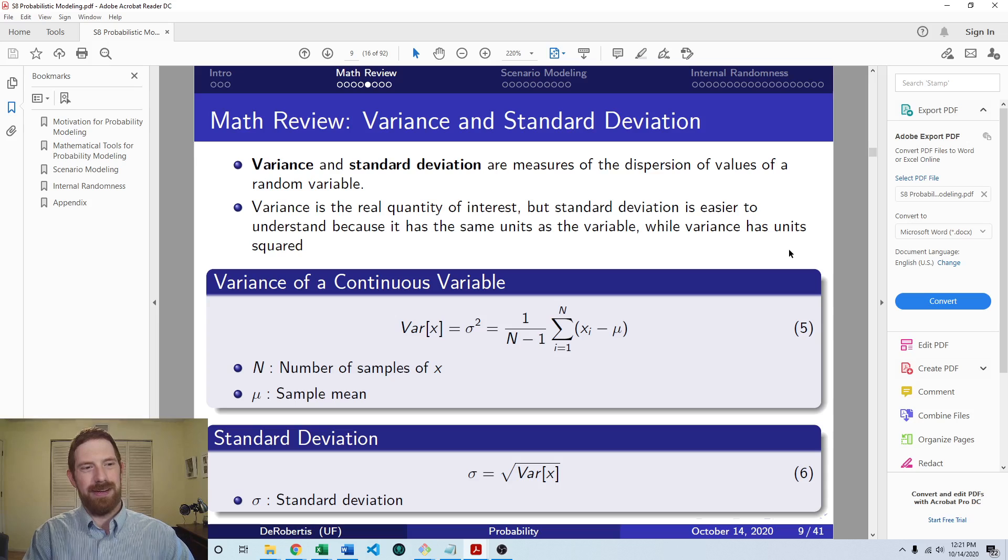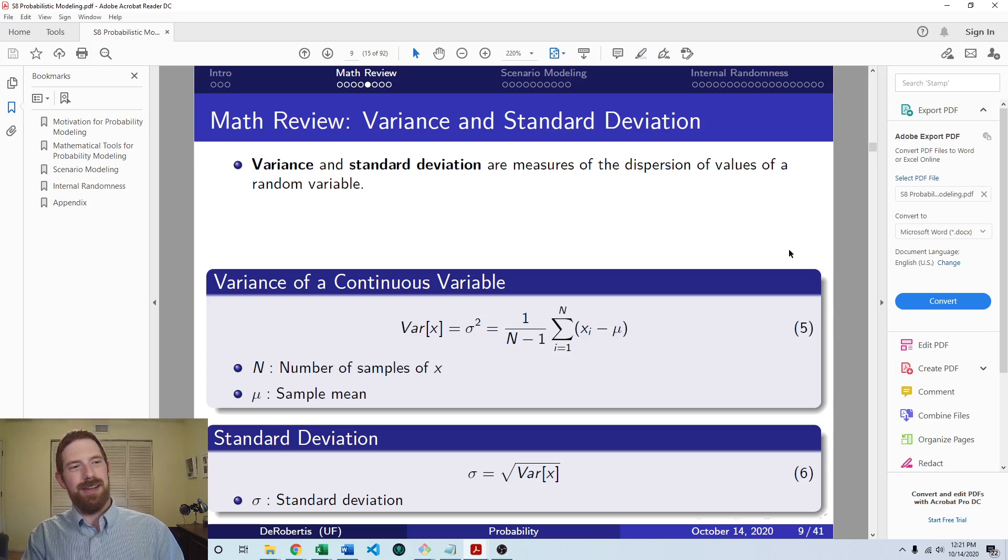And then as far as the calculation. So for a continuous variable, that's typically where you're going to need to do that. So there's the formula there for the variance of a continuous variable. Each occurrence minus the average summed up, and then multiplying that by one over n minus one is going to get us the variance.